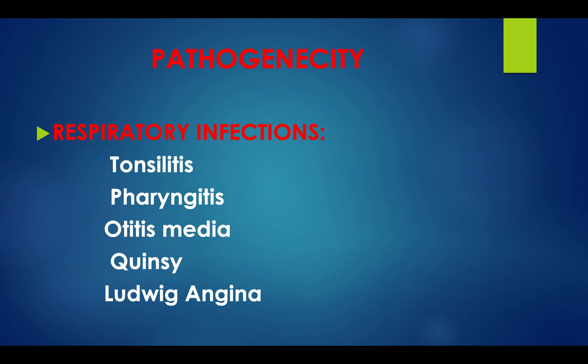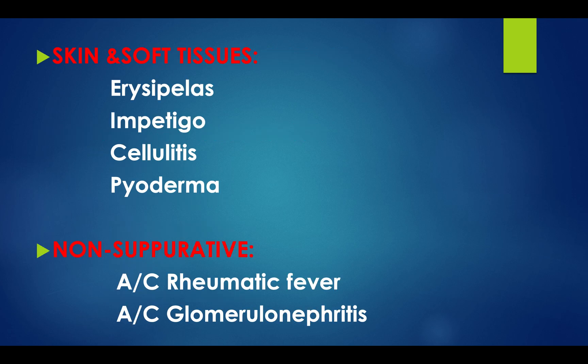Pathogenicity: respiratory infections produced by streptococcus include tonsillitis, pharyngitis, otitis media, quinsy, and Ludwig's angina. In skin and soft tissues it produces erysipelas, impetigo, cellulitis, and pyoderma. Non-suppurative diseases are acute rheumatic fever and acute glomerulonephritis.